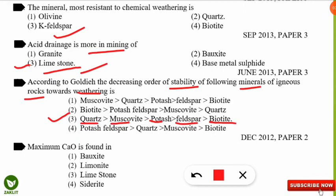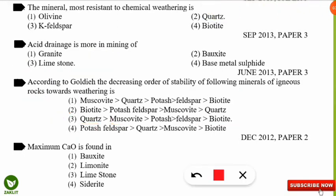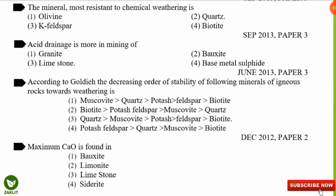The next question: maximum CaO (calcium oxide) is found in which kind of mineral? The correct option is option 3 — maximum CaO is found in limestone. Remember: limestone contains the most calcium, hence the maximum calcium oxide.